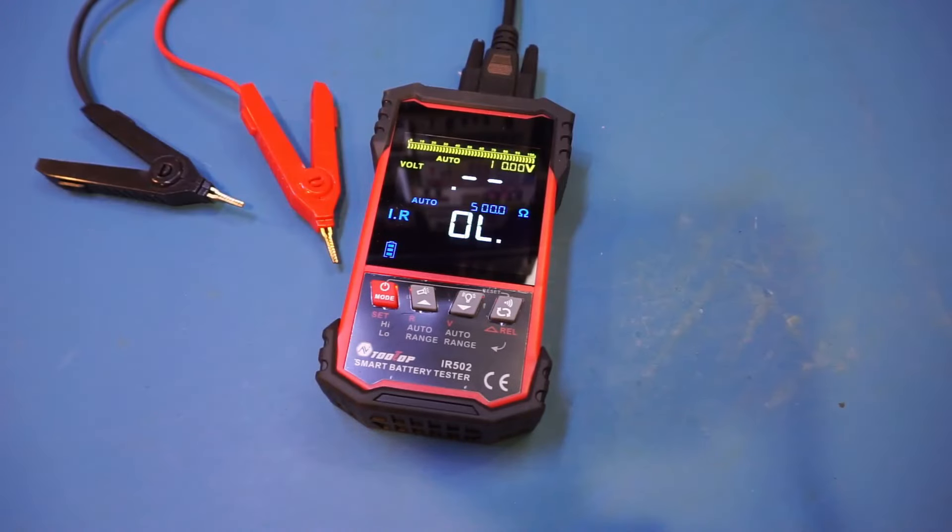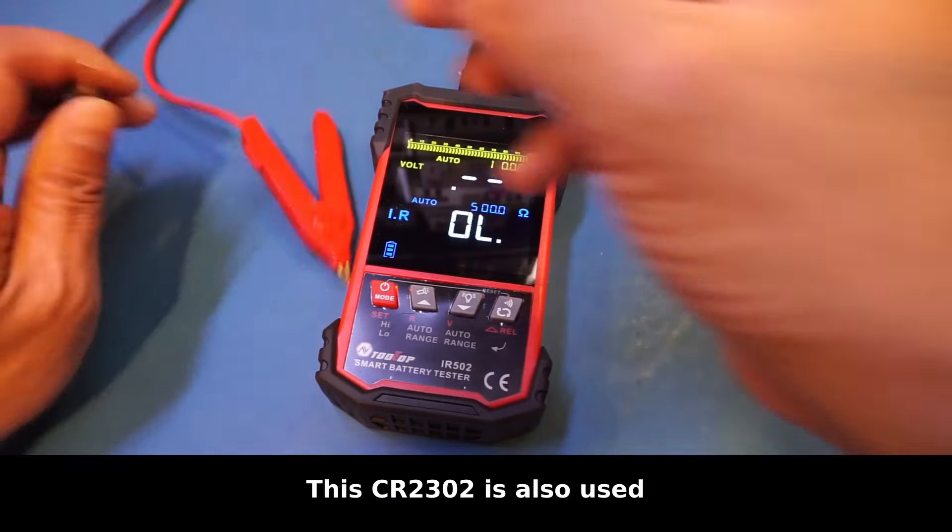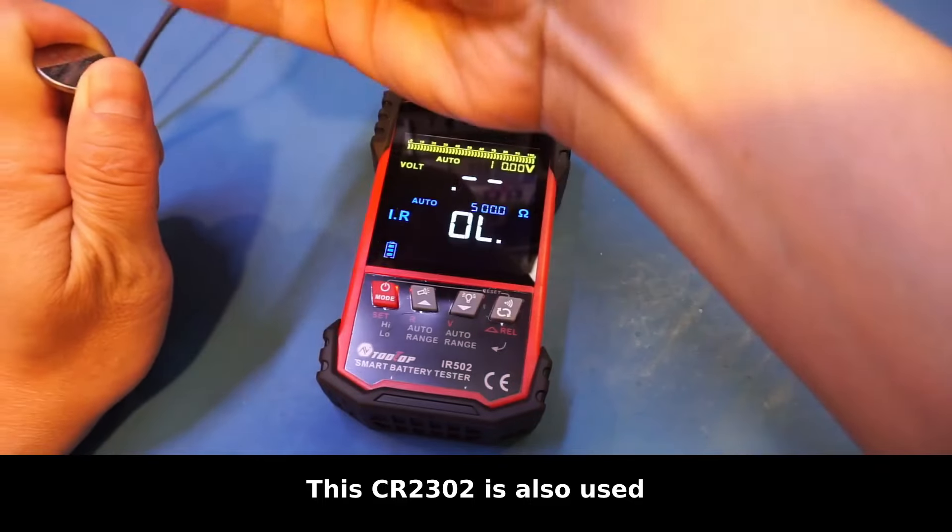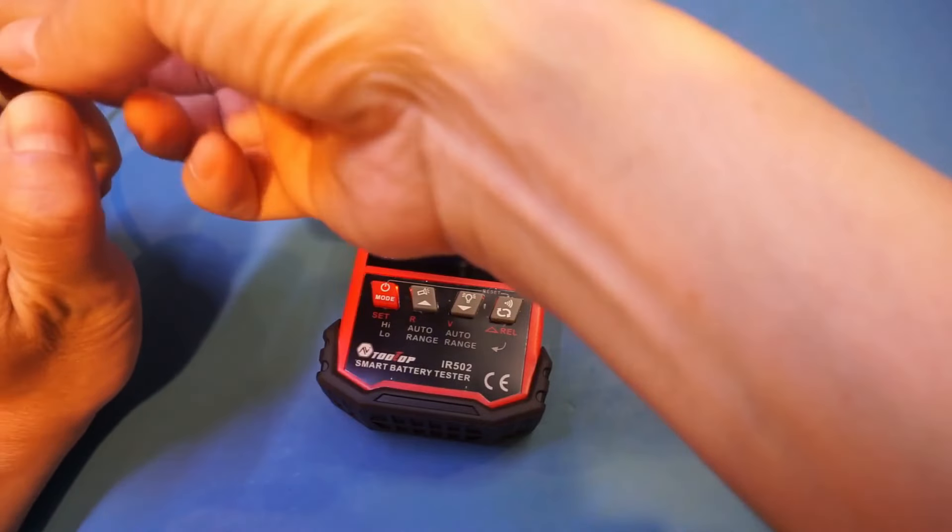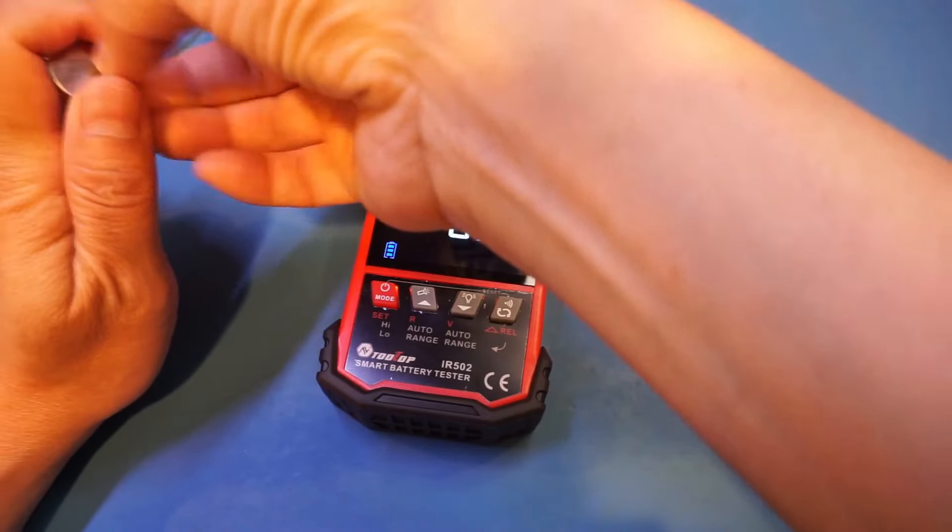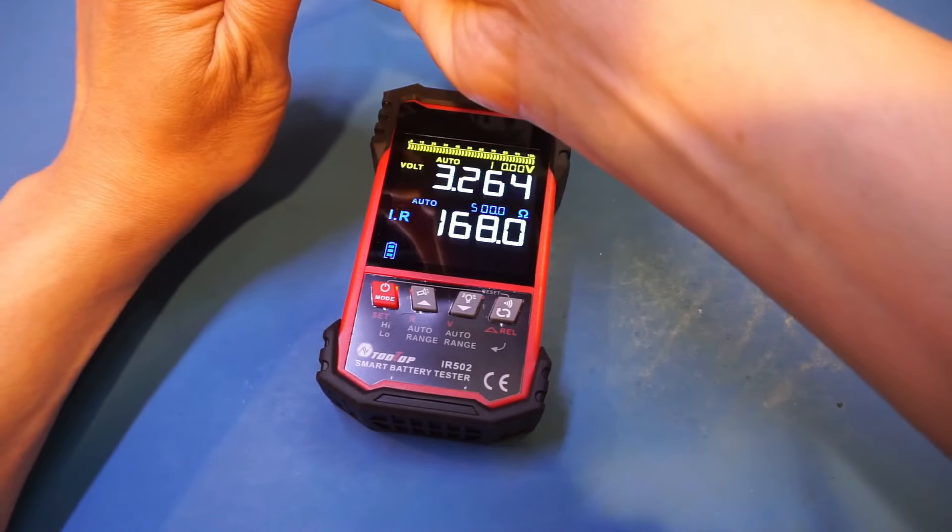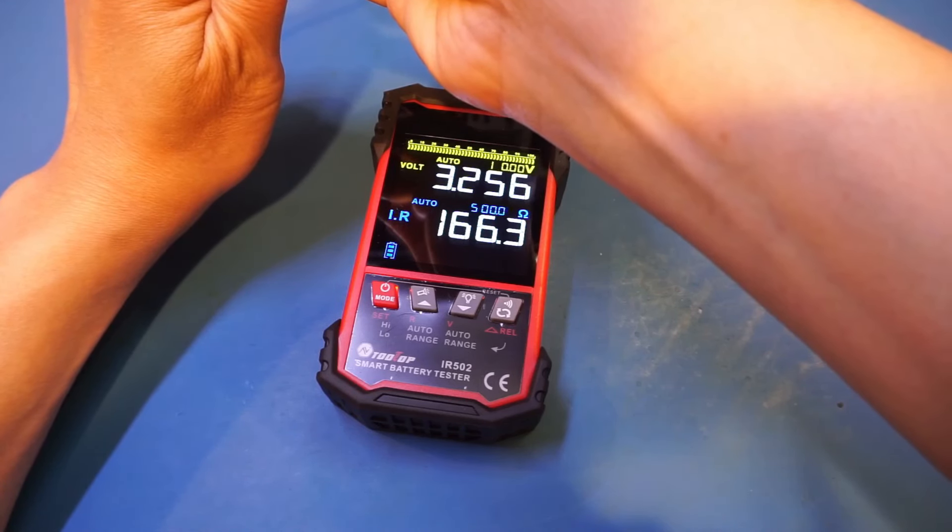Next I want to take a look at the coin cell. I would expect the internal resistance to be much, much higher. It's a little bit hard to hold here, so let's just try again. Now you can see once it stabilizes, we're measuring about 167 ohms.